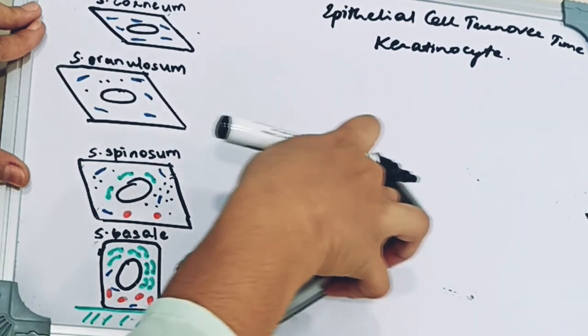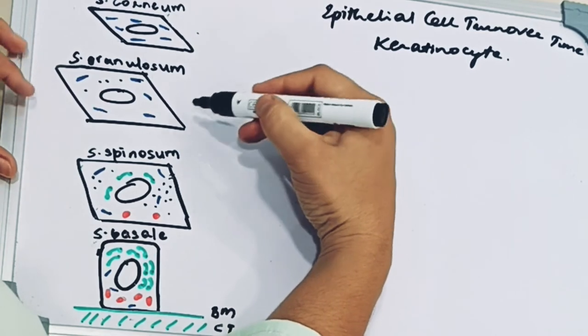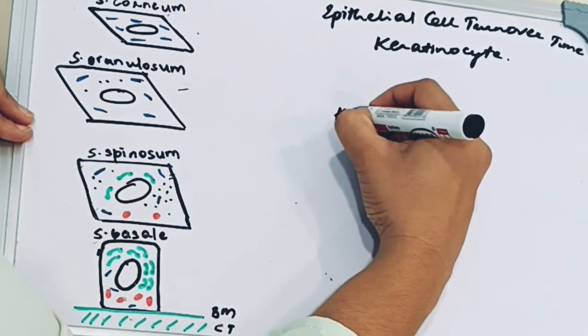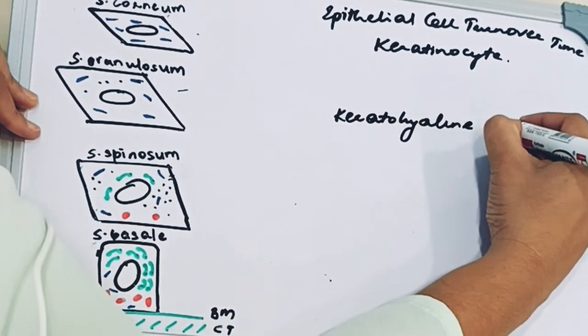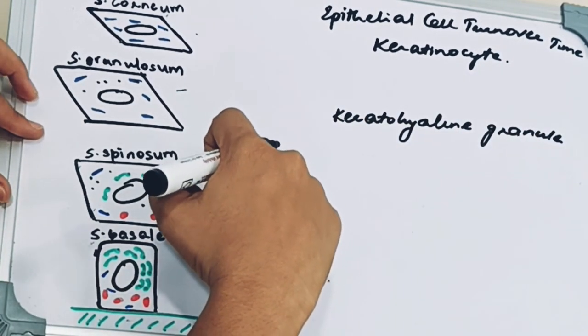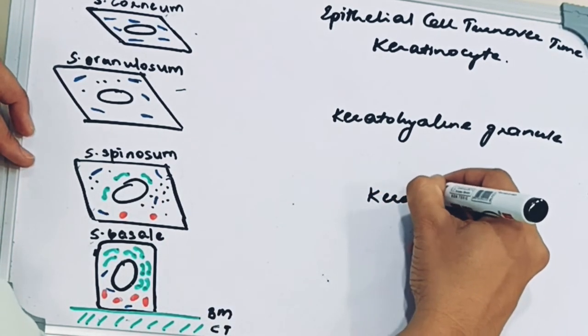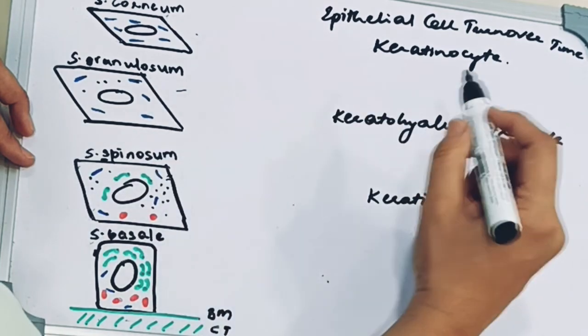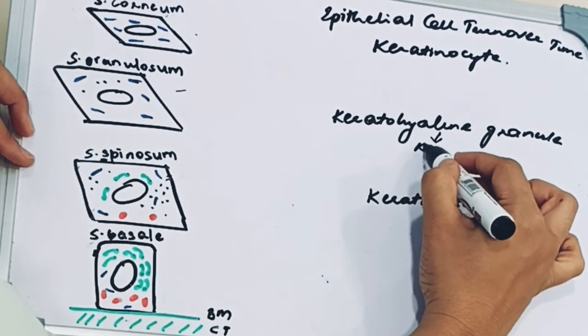As you go up further, we encounter stratum granulosum. In stratum granulosum, the cells become more flattened, almost squamous, and contain keratohyaline granules. Keratinosomes are present in stratum spinosum, while keratohyaline granules are present in granulosum. These produce keratin.